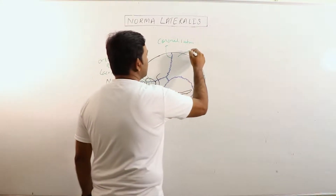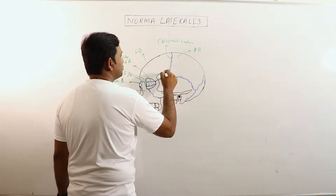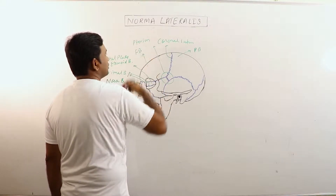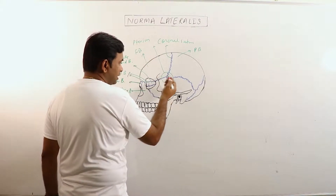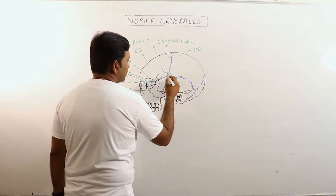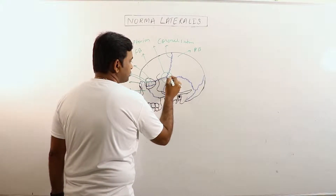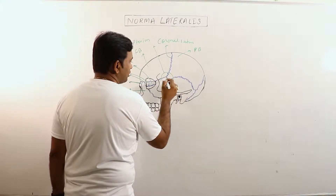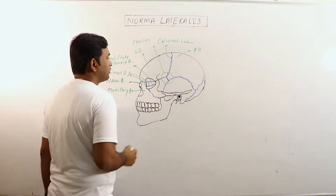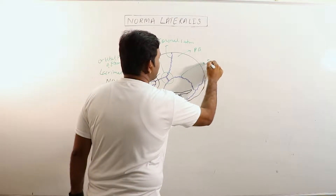This is the parietal bone. This region is known as the pterion. In the pterion we can observe that there are various sutures — this is frontal bone, this is parietal bone, this one is temporal bone, and this one is sphenoid bone. So this is pterion. Now this is the squamous suture.